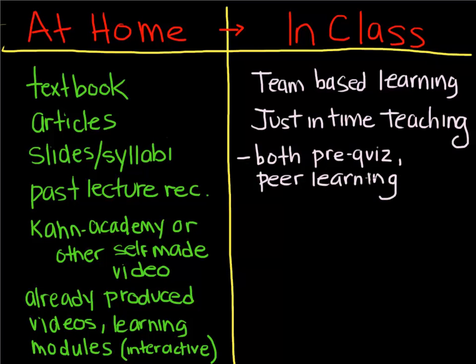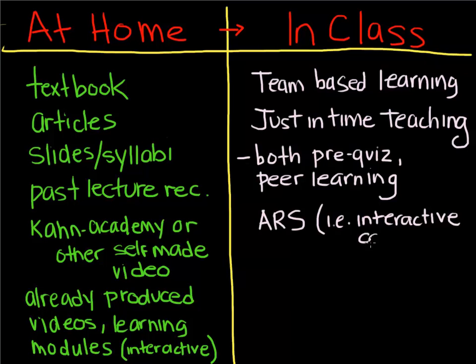JIT essentially involves asking the students a question using ARS. Then, if only about 30 to 80 percent of students answer correctly, you ask them to find students who chose a different answer and debate the correct answer. You then re-poll the students, and almost always they do better. If on the initial poll everyone gets the answer right, you can move on or ask a more difficult question. If too few get it right, you can back up and do some teaching. You can also flip your classroom simply by questioning students individually using ARS and going through several clinical vignettes, making the whole class time interactive — you don't have to employ peer-based teaching if you don't want to.